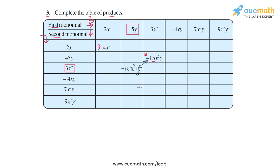Let's start filling the cells — observe the multipliers from the topmost row and leftmost column. The cell 2x × (-5y) gives -10xy, and by symmetry (-5y) × 2x is also -10xy. Then 2x × 3x² gives 6x³, since 2 × 3 is 6 and x × x² is x³, and 3x² × 2x is also 6x³.